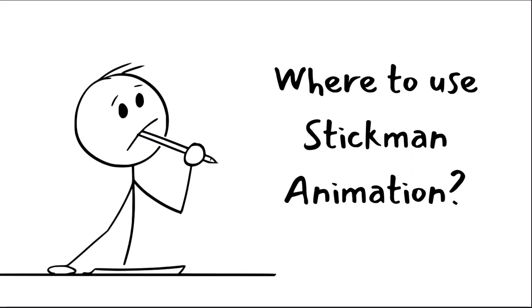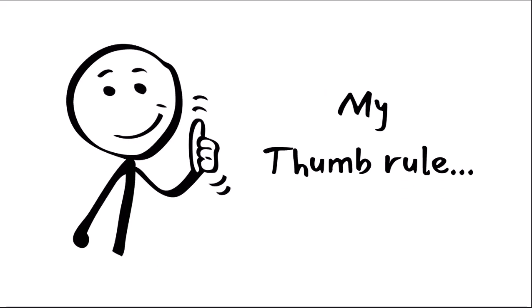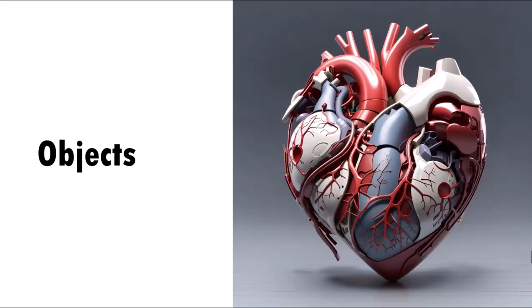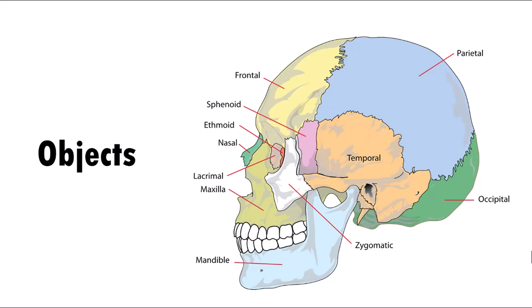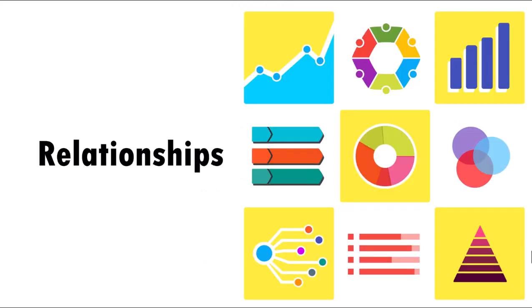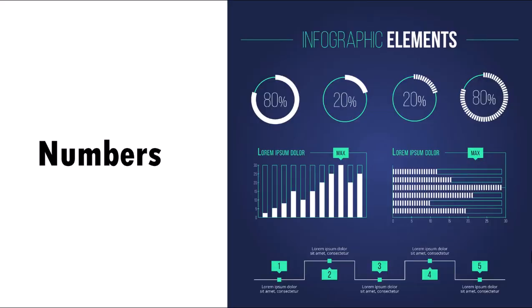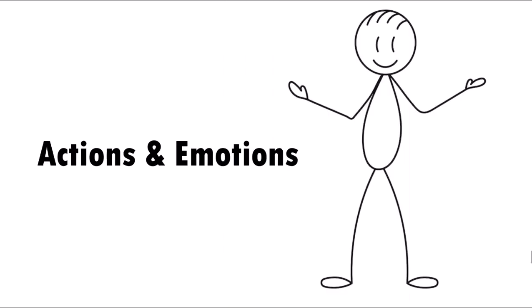Before we learn to make stickman animation, let us understand where to use the graphics in the first place. When it comes to using visual tools, there is a simple thumb rule I follow. To visualize objects like a human heart or parts of a skull, I use either photos or illustrations. To visualize relationships between elements, I use diagrams. To visualize the relationship between numbers, I use charts or infographics. To visualize actions and emotions while explaining a concept, I use stickman animation.